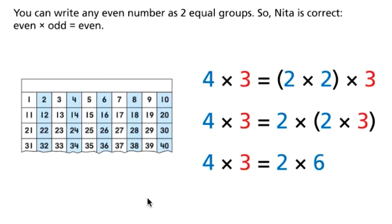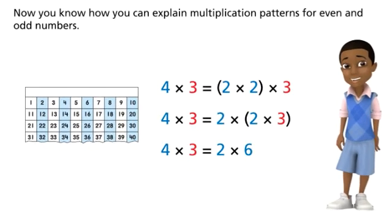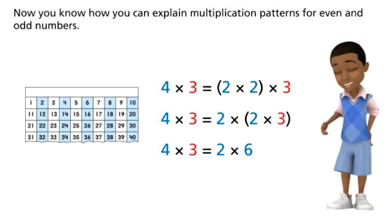You can write any even number as two equal groups, so Nina is correct. Even times odd equals even. Now you know how you can explain multiplication patterns for even and odd numbers. Thanks.